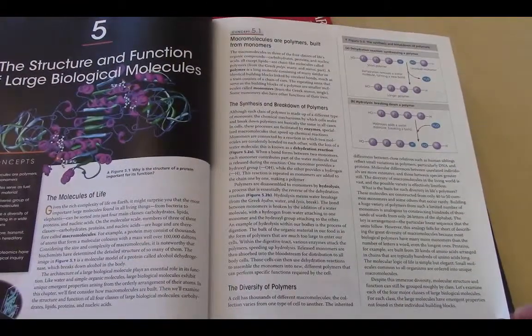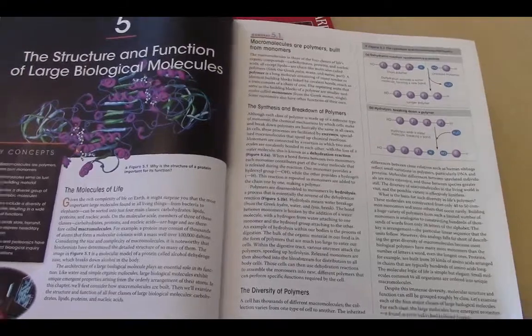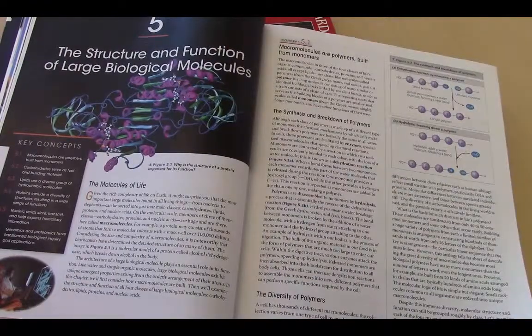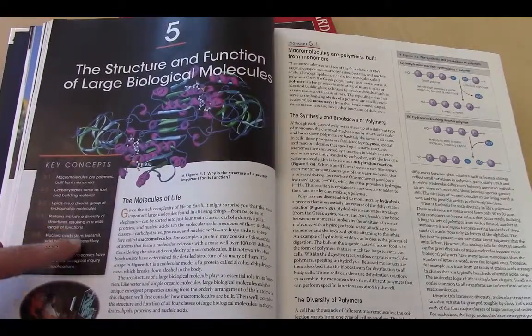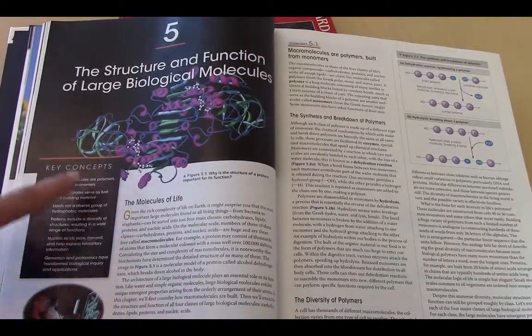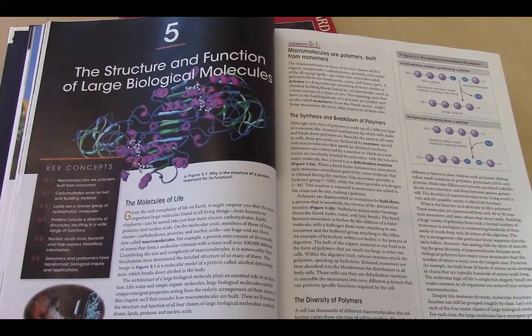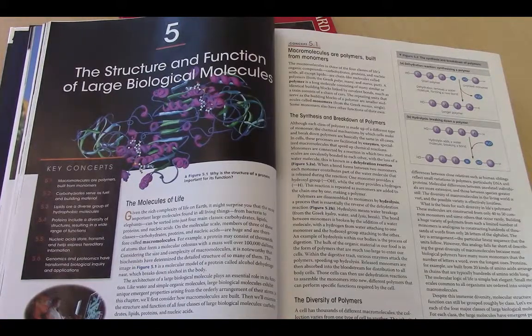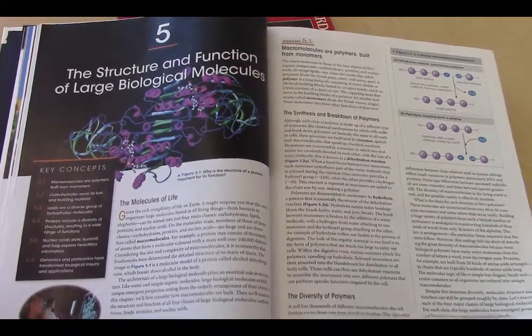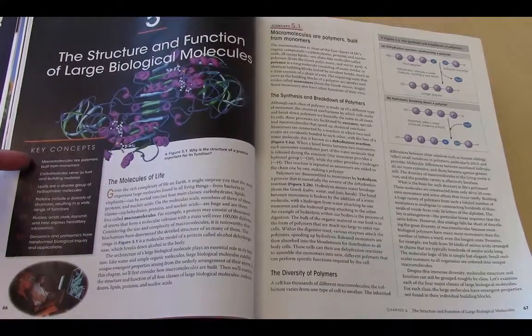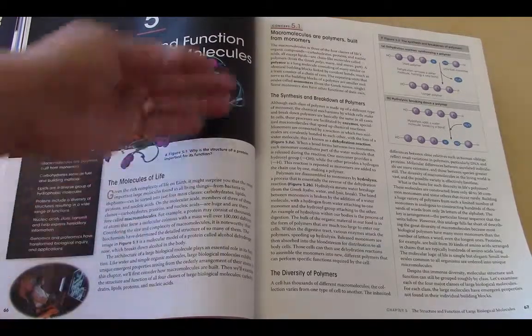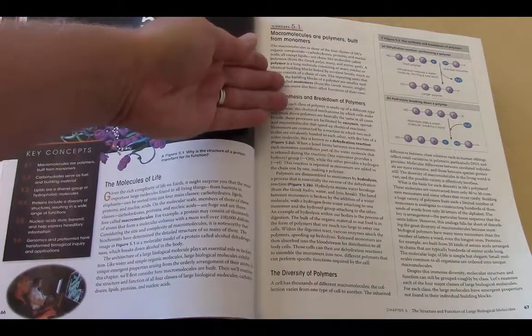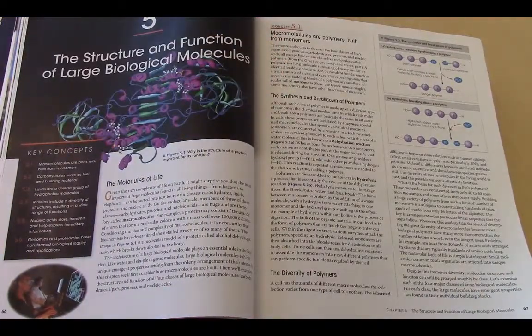Chapter 5, the structure and function of large biological molecules. The molecules of life. And as you start through the chapter, you'll notice that there's a series of key concepts that give you the organization of the chapter and the most important points that are covered in detail. And then the chapter is organized around those. So here we have 5.1 macromolecules or polymers built from monomers. And then our very first paragraph in concept 5.1 goes into that.